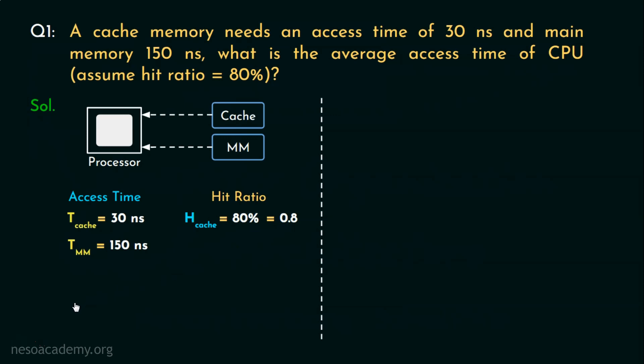Now, let's find out the average access time, usually termed as T_avg for this specific organization. H_cache is the possibility of finding the required word inside the cache and T_cache indicates the access time. Considering the chances of not finding the word inside the cache, 1-H_cache, the miss ratio of the cache, we will look for the word inside the main memory and T_MM is the access time of the main memory. Substituting the values: 0.8 × 30 + (1-0.8) × 150 nanoseconds, which equates to 24 + 0.2 × 150, which finally produces the result as 54 nanoseconds.